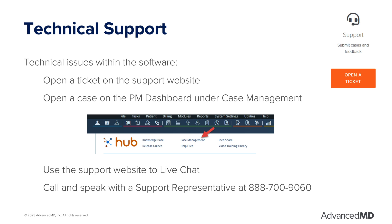If you are experiencing technical issues in the software such as an error message or screen not working correctly, we have a dedicated support team. Support is also able to assist with items that you may have learned in implementation and need a reminder of how to do a task in the software. You can contact support in a few different ways: use the open a ticket option on the support website, use the case management link on the PM dashboard — this allows you to track and manage cases and their progress — use the live chat option on the support website, or call and speak with a support representative at 888-700-9060.